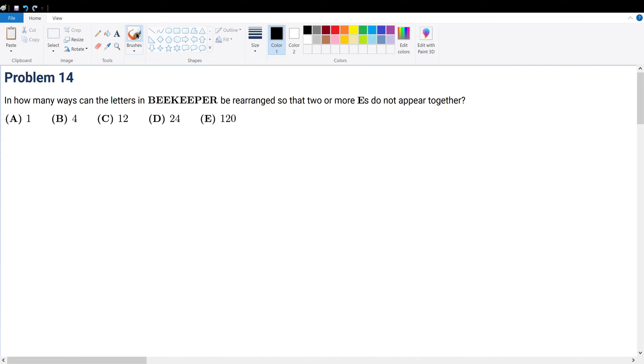Before approaching this question, understand that there are two ways to approach this. One is to count up all the cases where the number of E's do appear together and then subtract that out from the total amount. And that's called complementary counting.